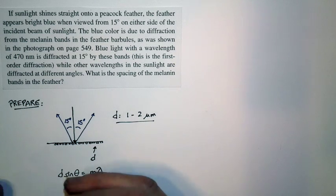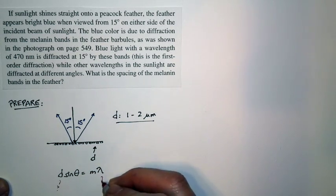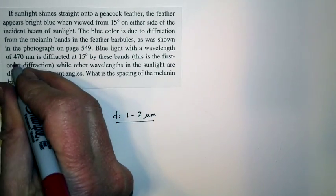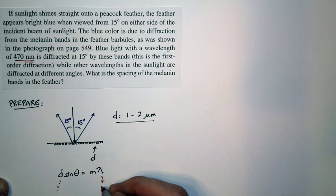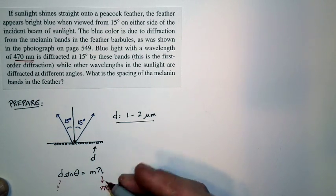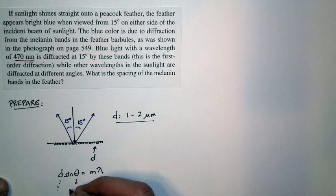What do we use for the different numbers? Well, D is what we're looking for. How about the wavelength? We're told this corresponds to diffraction for light of wavelength 470 nanometers.